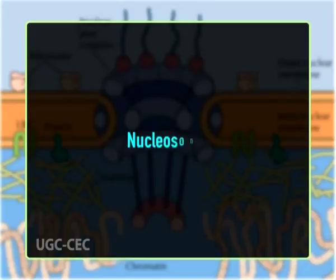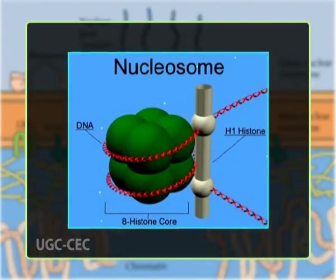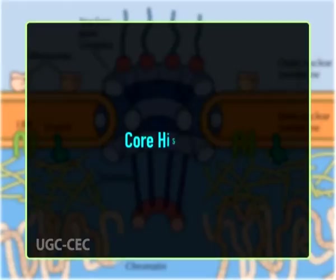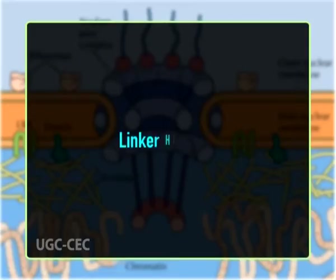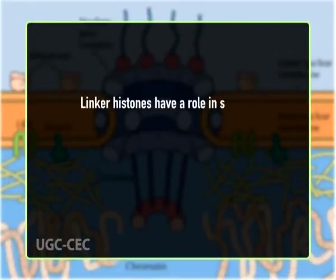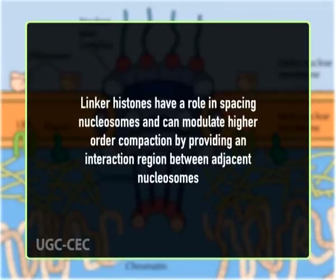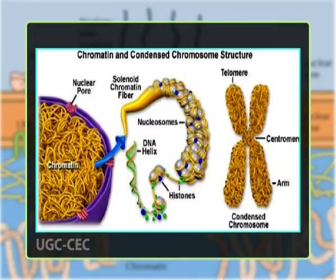The nucleosome is the fundamental unit of chromatin. It is composed of a core particle and a linker region that joins adjacent core particles. The core particle is highly conserved between species and is composed of 146 base pairs of DNA wrapped 1.7 turns around a histone protein octamer of H3, H4, H2A, and H2B. Linker histones H1 and H5 associate with the linker region of DNA between two nucleosome cores and, unlike the core histones, they are not well conserved between species. The linker histones have a role in spacing nucleosomes and can modulate higher-order compaction by providing an interaction region between adjacent nucleosomes.